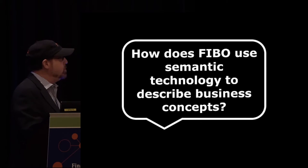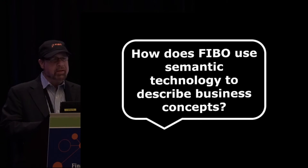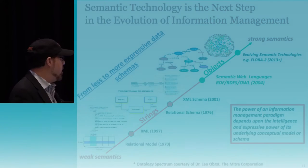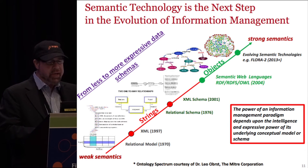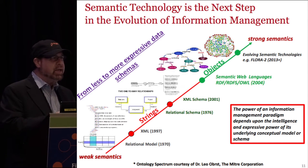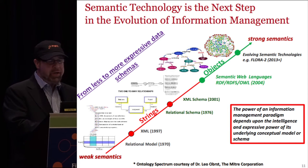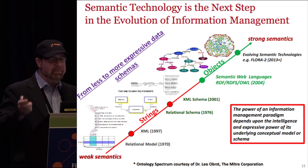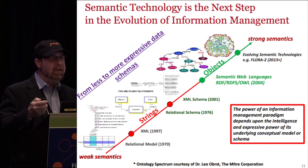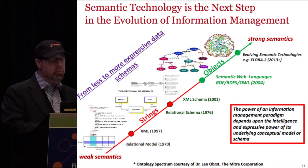So how does FIBO use semantic technology? The strength of any information management paradigm is directly related to the level of expressivity of its internal model. As we look at a linear trajectory from weak semantics up to strong semantics, we can see an evolution from looking at information as strings to a much more animated sense of objects — rich objects that have relationships with each other with rich forms of expressivity.